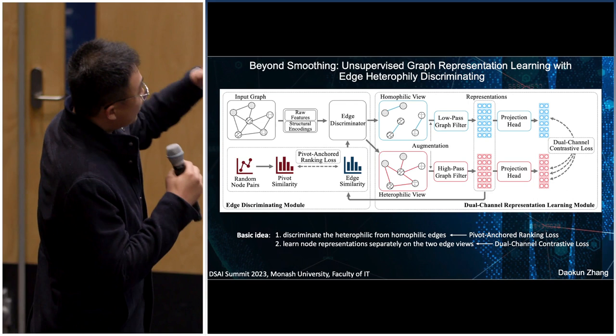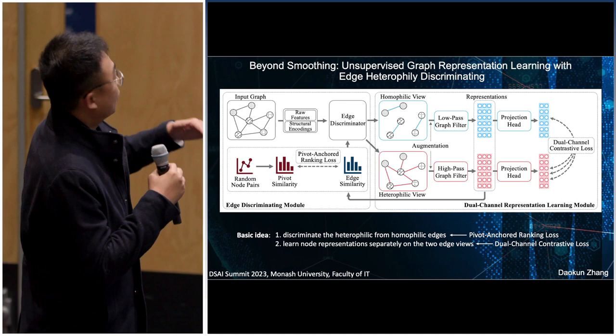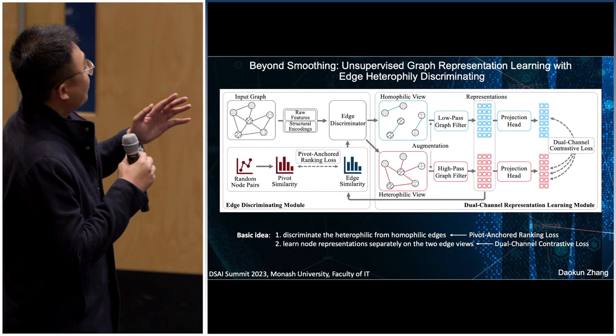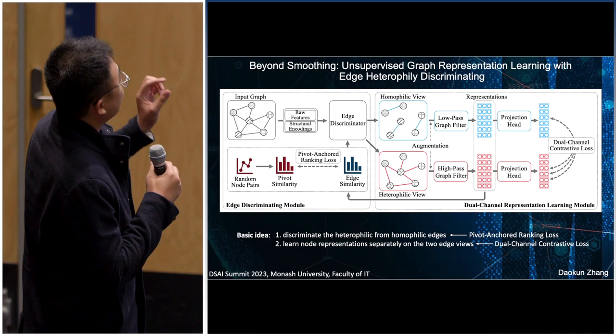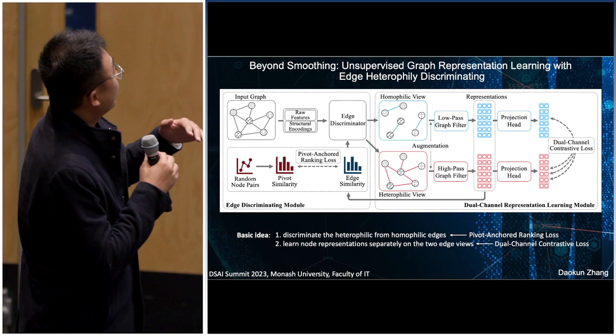We construct representations on the two edge views and use a pivot anchor loss to train the edge discriminator. It forces nodes connected by heterophily edges to have lower similarity than randomly sampled node pairs, and forces nodes connected by homophily edges to have higher similarity than randomly sampled node pairs. For more information, please come talk to me at the poster session.